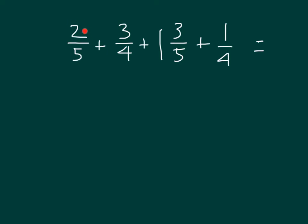Here's 2 fifths and 1 and 3 fifths. 2 fifths more than 1 and 3 fifths would be 1 and 5 fifths, which is also equal to 2. Now the other two fractions we are grouping are 3 fourths with 1 fourth, and we know 3 fourths and 1 fourth together give us 1.